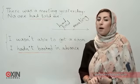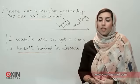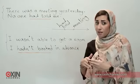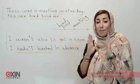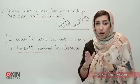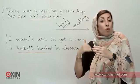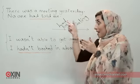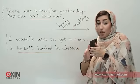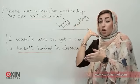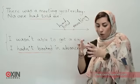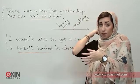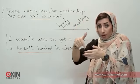First of all we're going to talk about the usage. When do we use past perfect? You're talking about something that happened in the past — a simple past action — that is the main event. But you want to go even before that in time. Yesterday there was a meeting, but before the meeting no one had told me. So I'm talking about a main event but I want to go before that — no one had told me before yesterday.